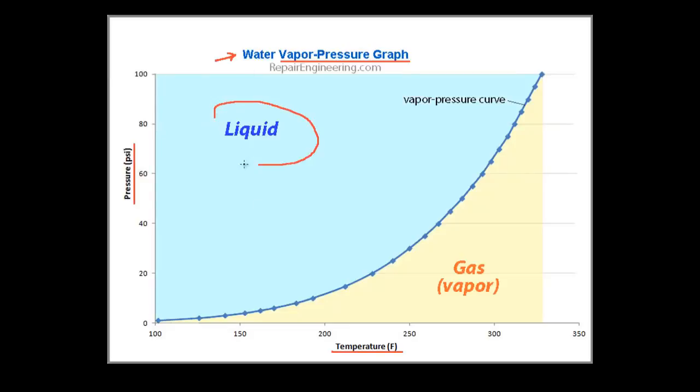Notice that this upper portion of the graph is labeled as a liquid, and this lower section is a vapor, or a gas. This line is known as the vapor pressure line, or the vapor pressure curve, and it identifies the point of transition from a liquid to a gas, the process that we typically call boiling.